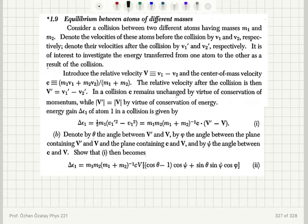We will now look at part B of this problem. Consider a collision between two different atoms having masses M1 and M2. Denote the velocities of these atoms before the collision by V1 and V2 respectively, and denote their velocities after the collision by V1' and V2' respectively.